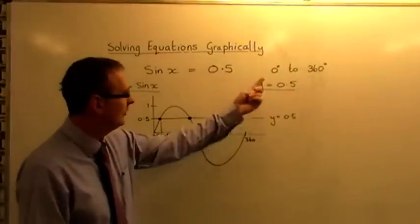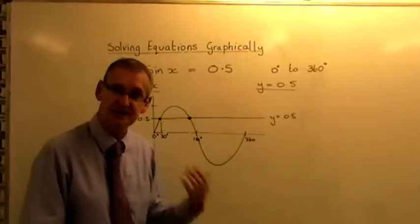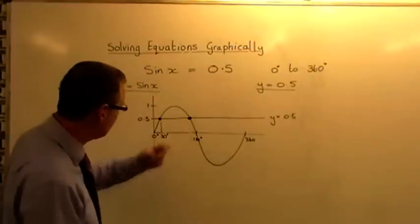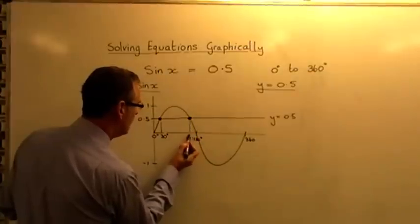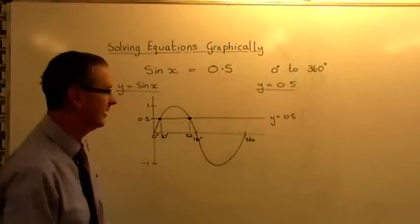If you want to give all answers from 0 to 360 degrees, there will be a second answer. And that second answer, you will just simply drop down from there and you will read off the scale there.